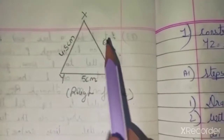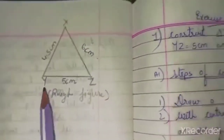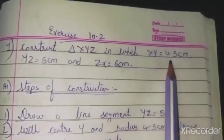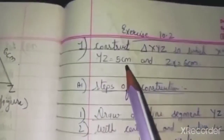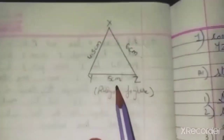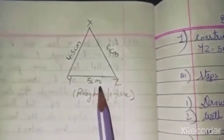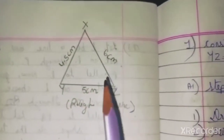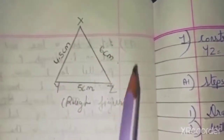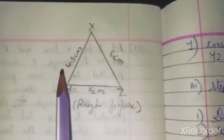From the question, XY is 4.5 cm, so I will write 4.5 here. YZ is 5 cm, so I write 5 cm here. ZX is 6 cm, so I write 6 cm here. This rough figure gives a clear idea of all the sides.